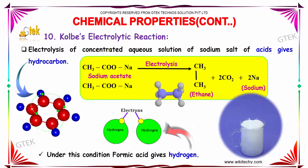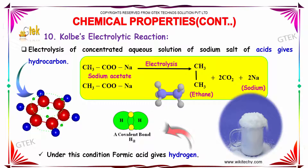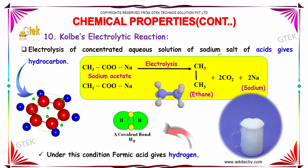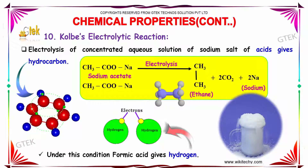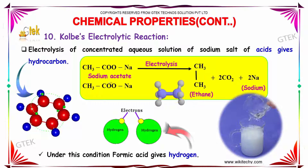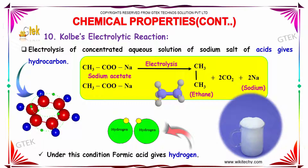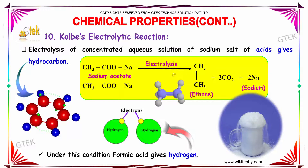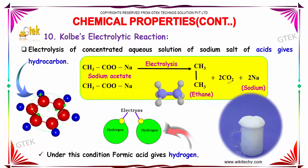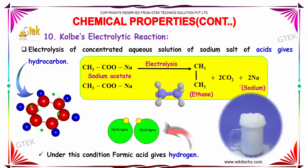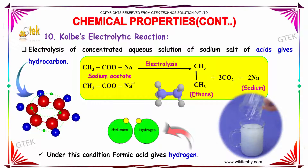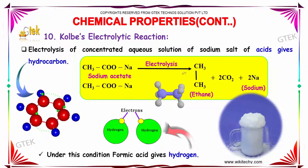Kolbe's electrolytic reaction. Electrolysis of a concentrated aqueous solution of the sodium salt of an acid gives a hydrocarbon. That is, sodium acetate on electrolysis produces ethane. Furthermore, we obtain two molecules of carbon dioxide and two molecules of sodium. Under this condition, formic acid produces hydrogen.